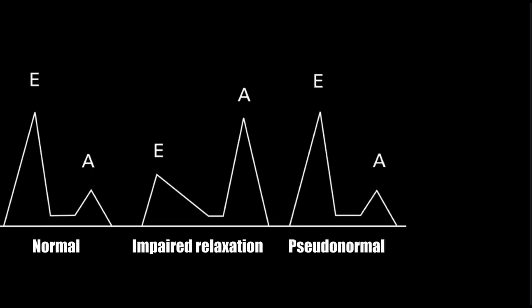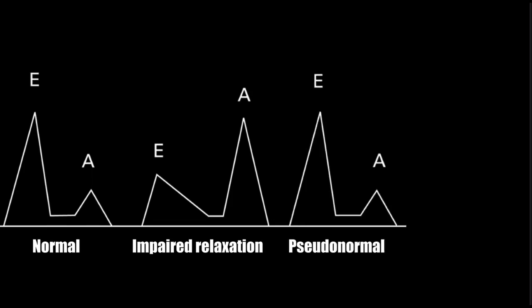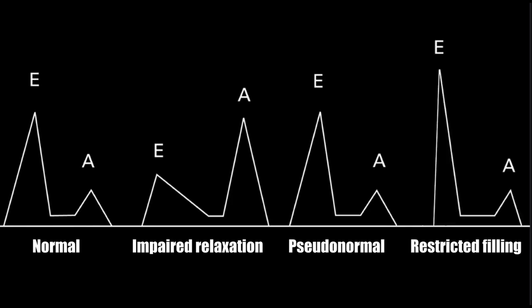As we progress toward worsening diastolic dysfunction to pseudonormal, we're seeing increased left atrial pressures, and E becomes greater than A again. Then as we get to restrictive filling — which is the worst — E is significantly greater than A. Normal diastolic function and pseudonormal diastolic function can look pretty similar, and it can be hard to tell the difference between the two.